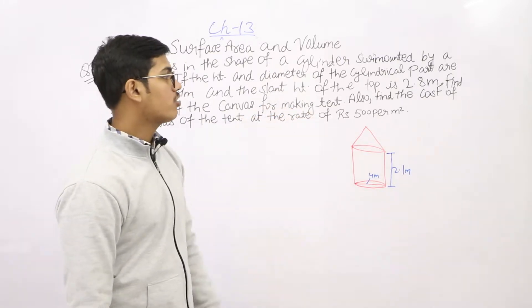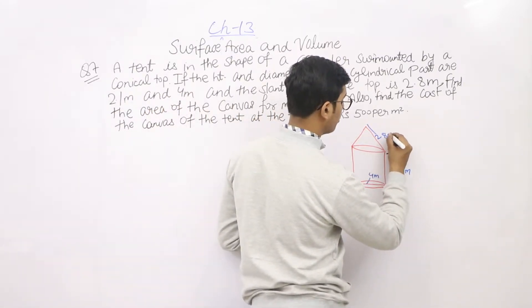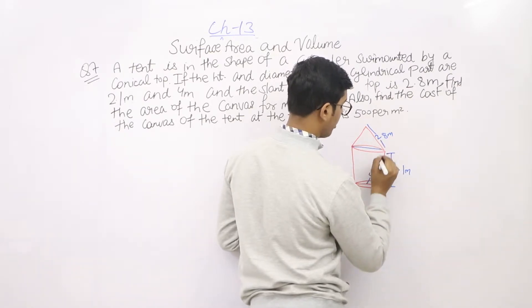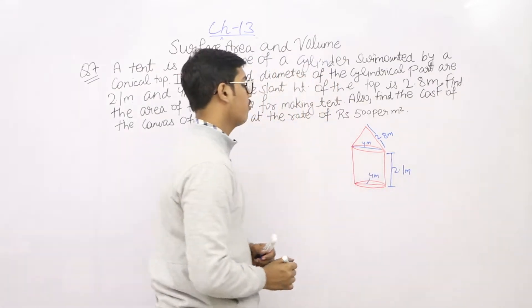The slant height of the conical top is 2.8 meter. The radius will be 2 meter because the radius is the same as the cylinder radius.